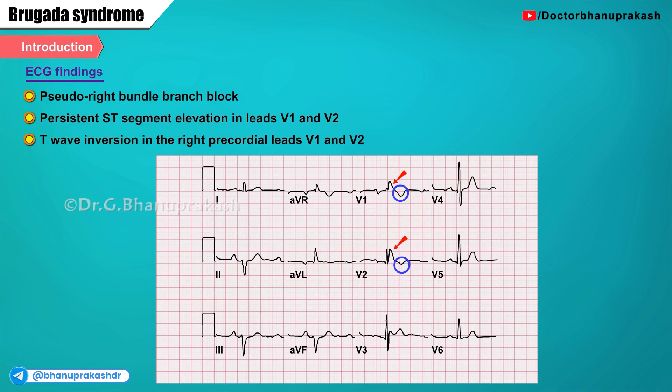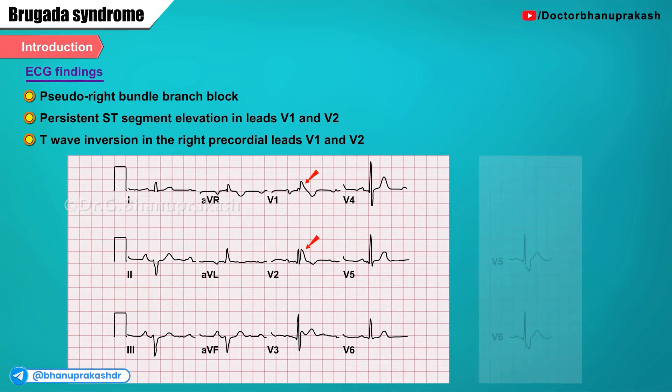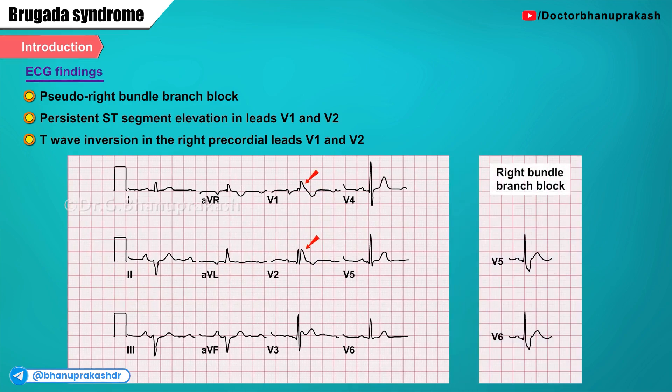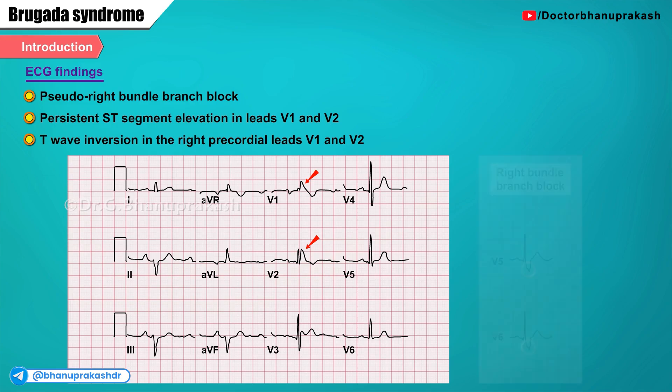Note that the QRS is normal. The widened S wave in the left lateral leads V5 and V6 that is characteristic of right bundle branch block is absent, as seen here in this ECG.